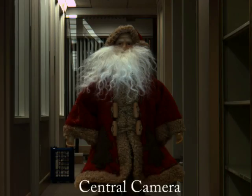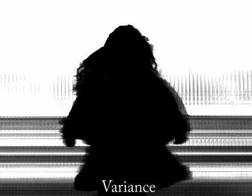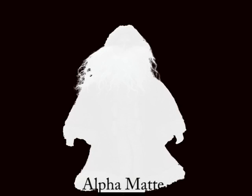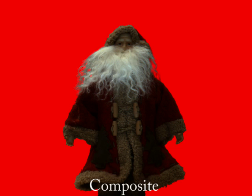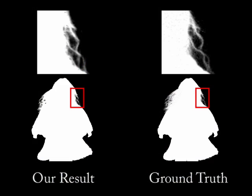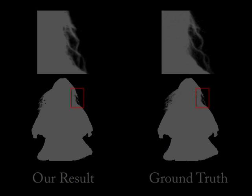We now show results for several static scenes. Here we show the central camera image for a Santa doll filmed in an office corridor. This is the variance image, the tri-map, the alpha-mat, and a composite. Note that our result recovers the same fine hair structure present in the ground truth result.